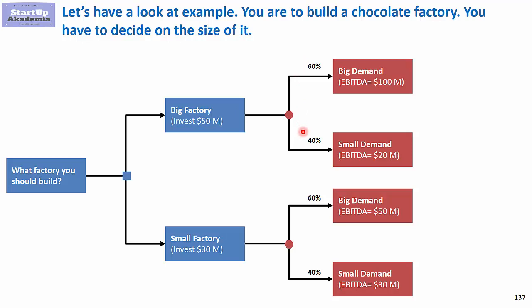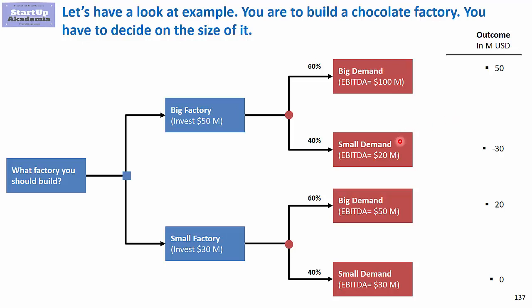This leads us to different outcomes. If we build a big factory and we are faced with big demand, then the net effect will be 50 million — calculated as the difference between the 5-year EBITDA and the big factory investment cost. Small demand will mean that we will actually be losing money.